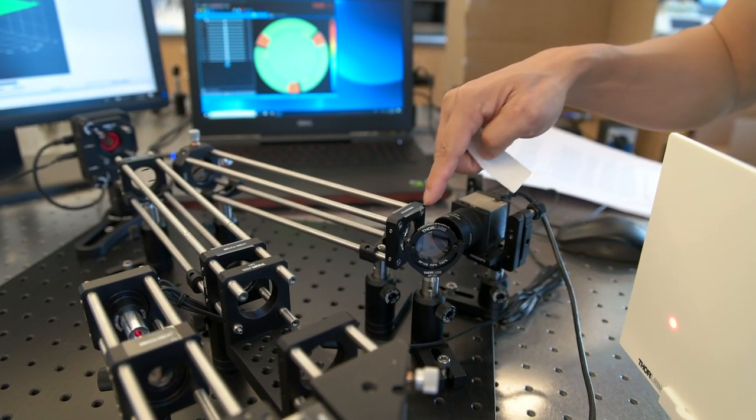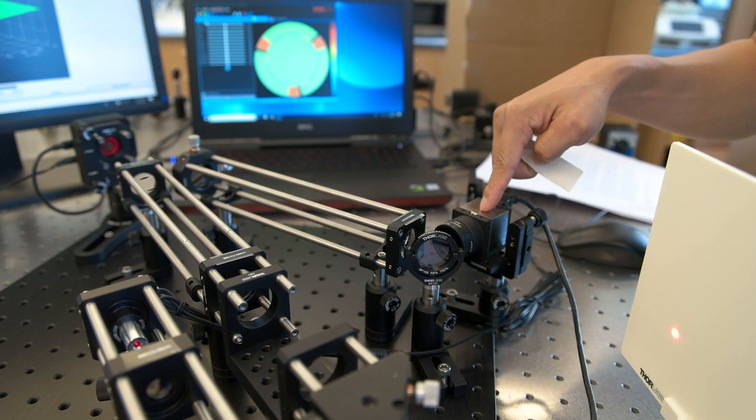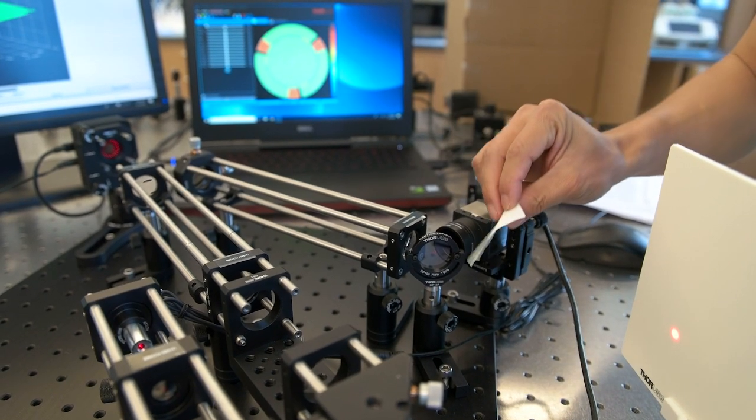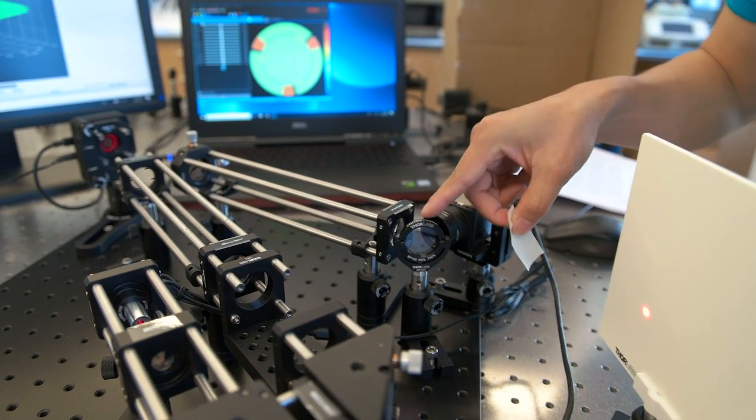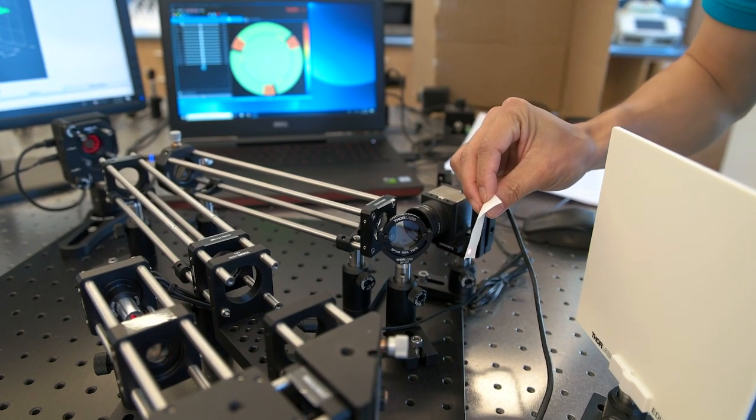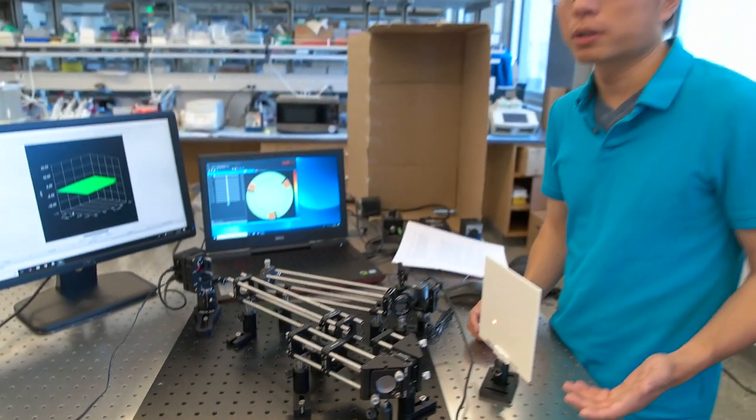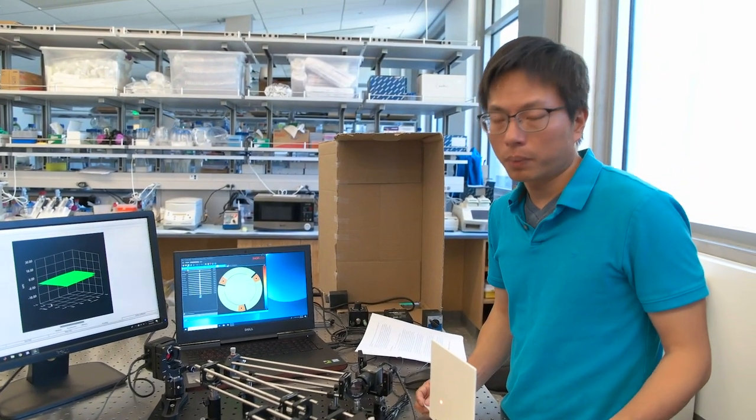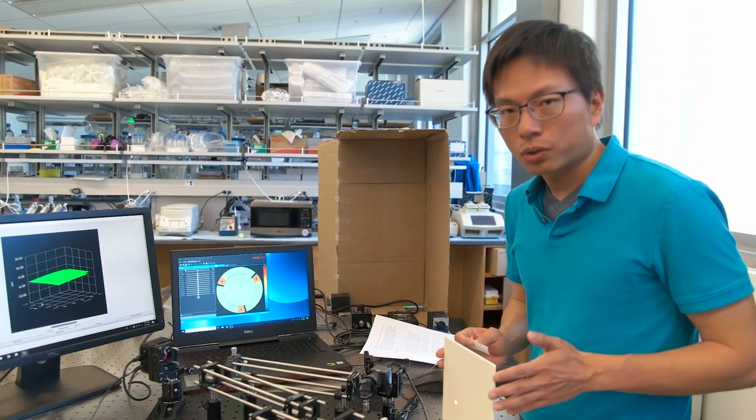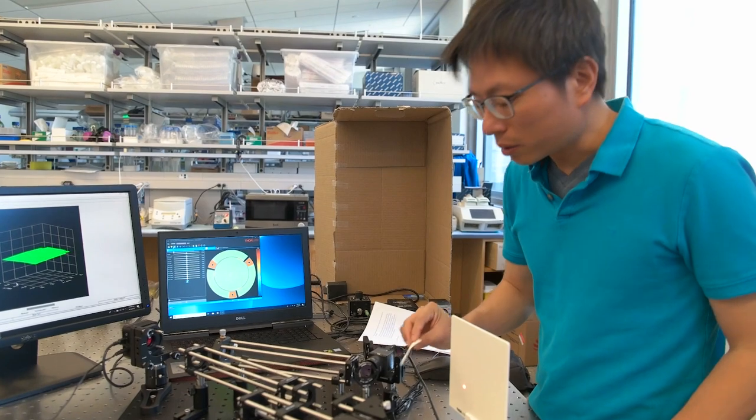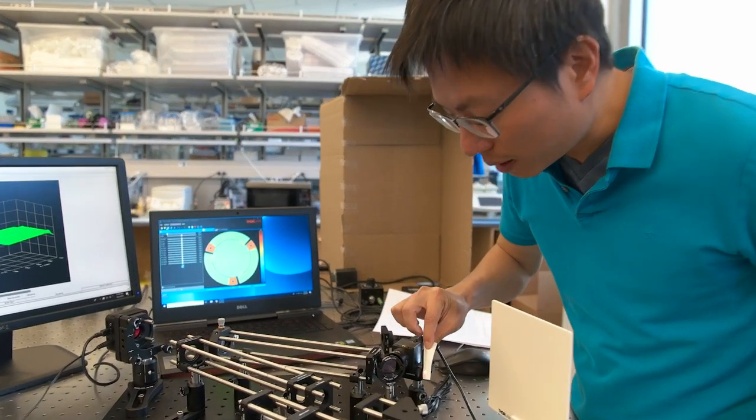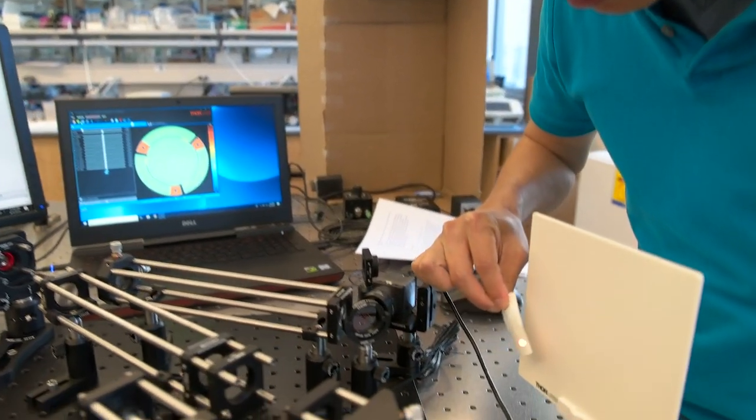One arm of the laser is guided into the wavefront sensor. Another arm passes through the beam splitter and can be guided into an optical system such as a microscope. But for now, we set up a screen to block the laser so we can see the laser beam directly on the screen here.